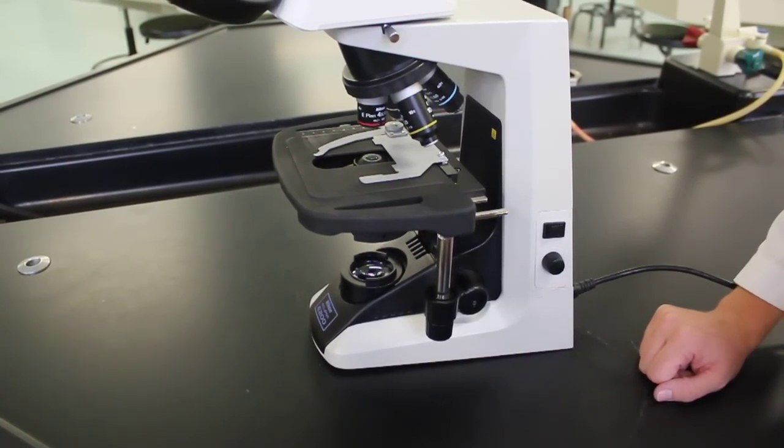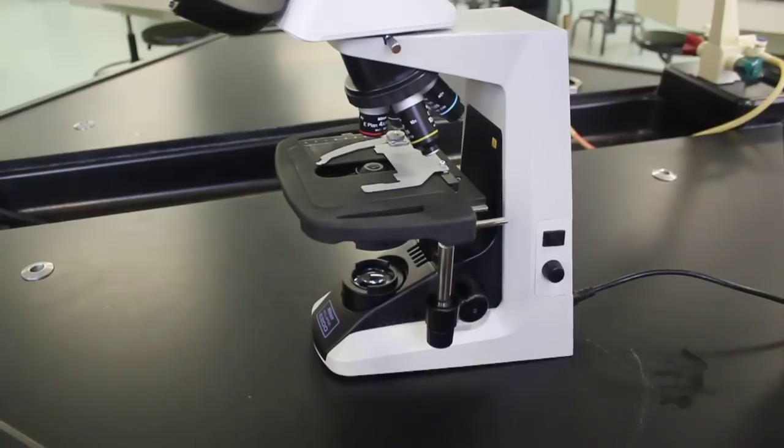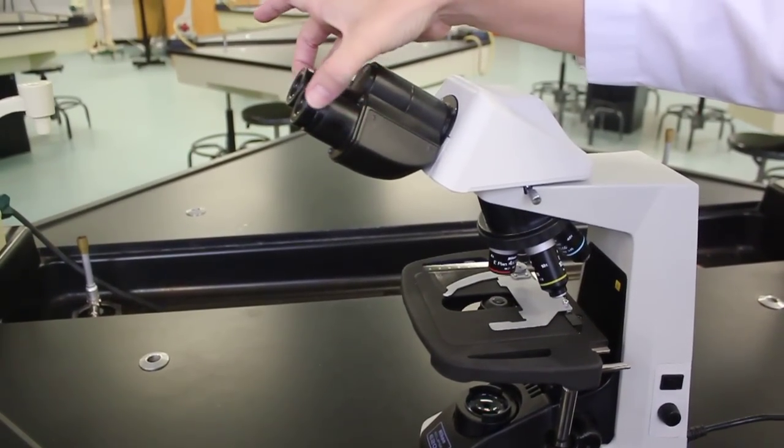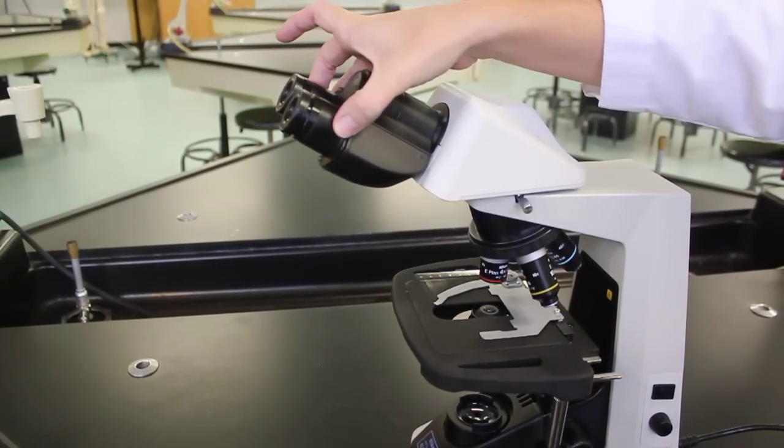To give you a quick overview of our Nikon microscopes, starting at the top, these are the oculars. They are magnified. This is what you will look through.